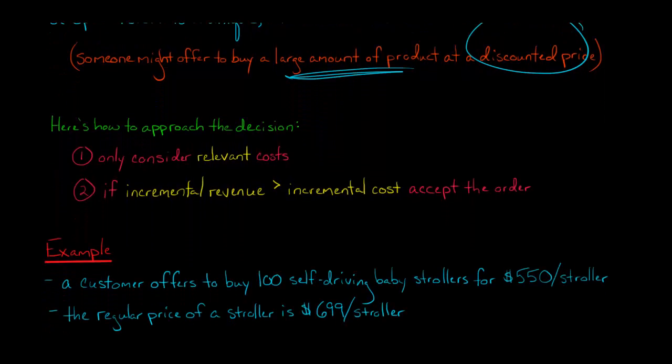So let's say a customer offers to buy some strollers. Let's say you've got self-driving baby strollers. How about that for an invention? The parents don't even have to accompany the baby. So they say, look, we're going to buy 100 of these. We'll pay $550 per stroller. And your company's regular price for a stroller is $699 per stroller. So they're basically wanting a discount of $149 here. But they're saying, I'll buy 100 of these strollers. I just want the cheaper price.